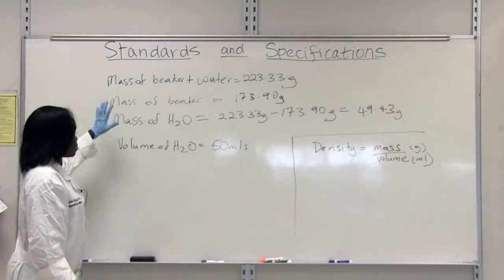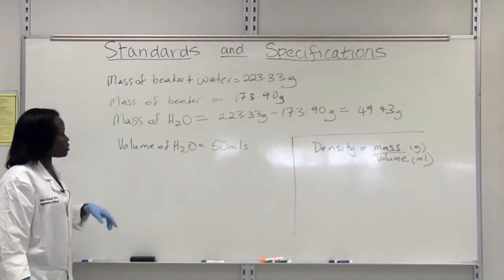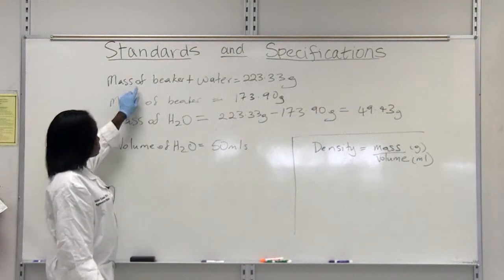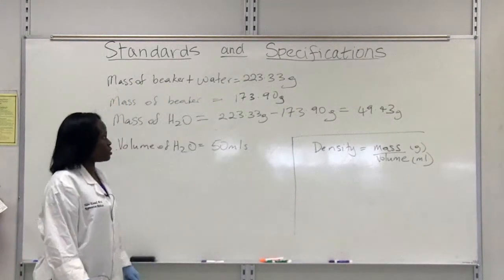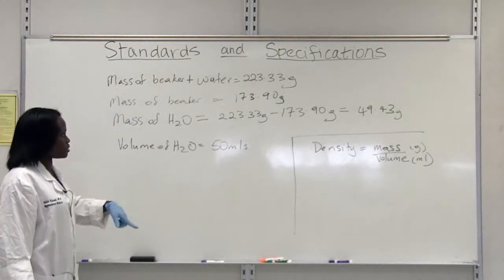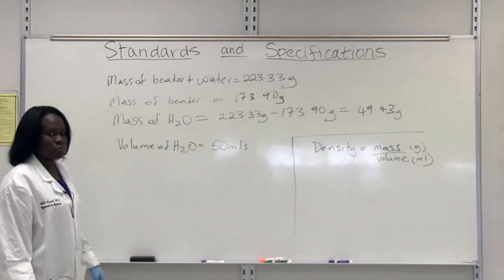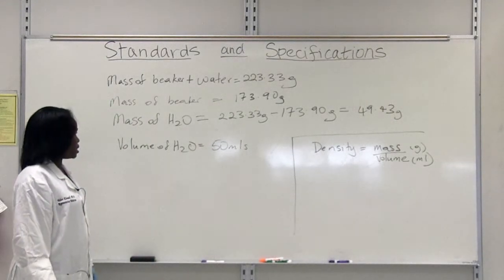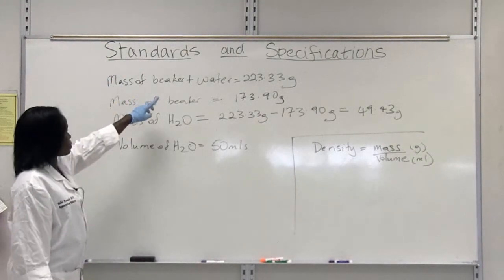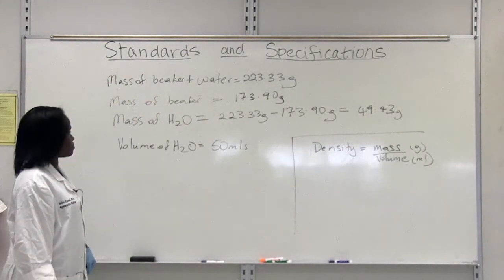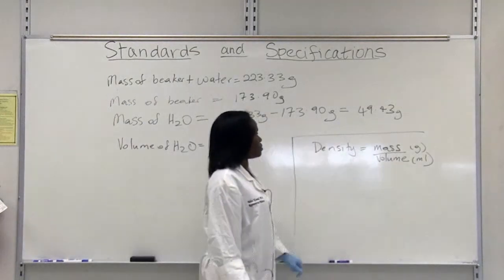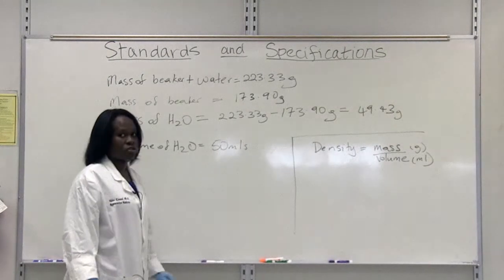Okay, so this is the data that we have got from our measurement of the weight of water. So remember, the mass I got of the beaker plus water was 223.33 grams. The mass of the beaker, which I weighed, was 173.9 grams. So we can determine, therefore, the mass of the water by subtracting mass of beaker plus water from mass of beaker, which you see here. The mass of the water is therefore 49.43 grams.